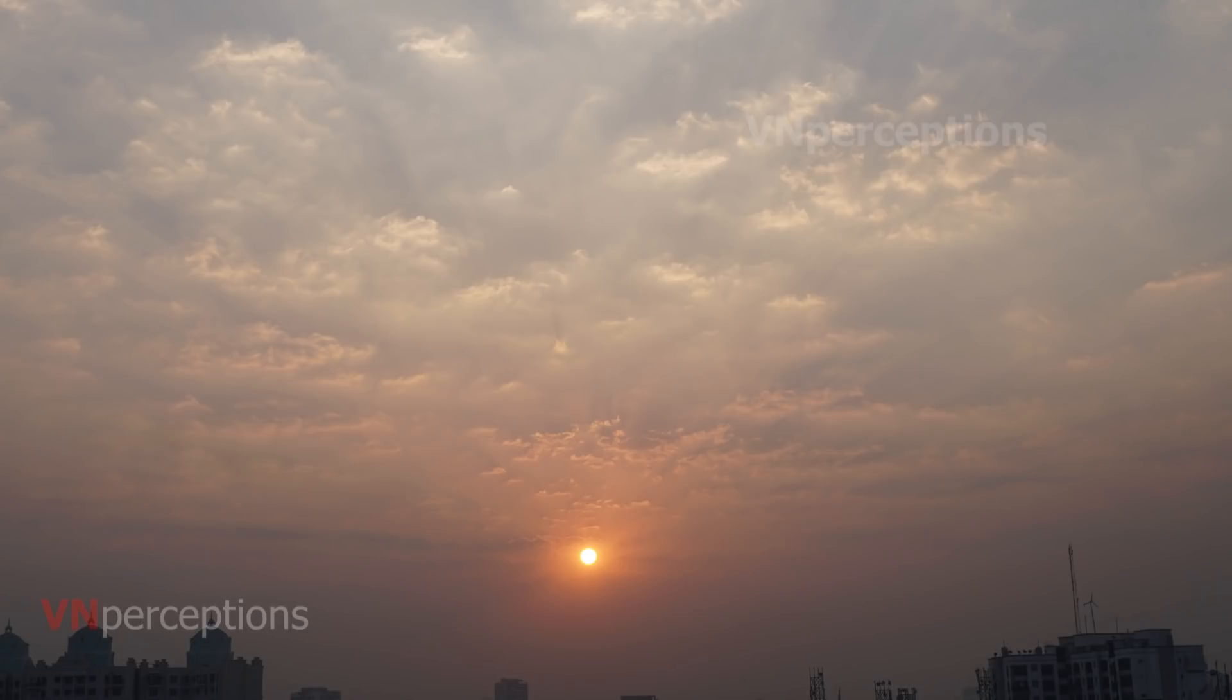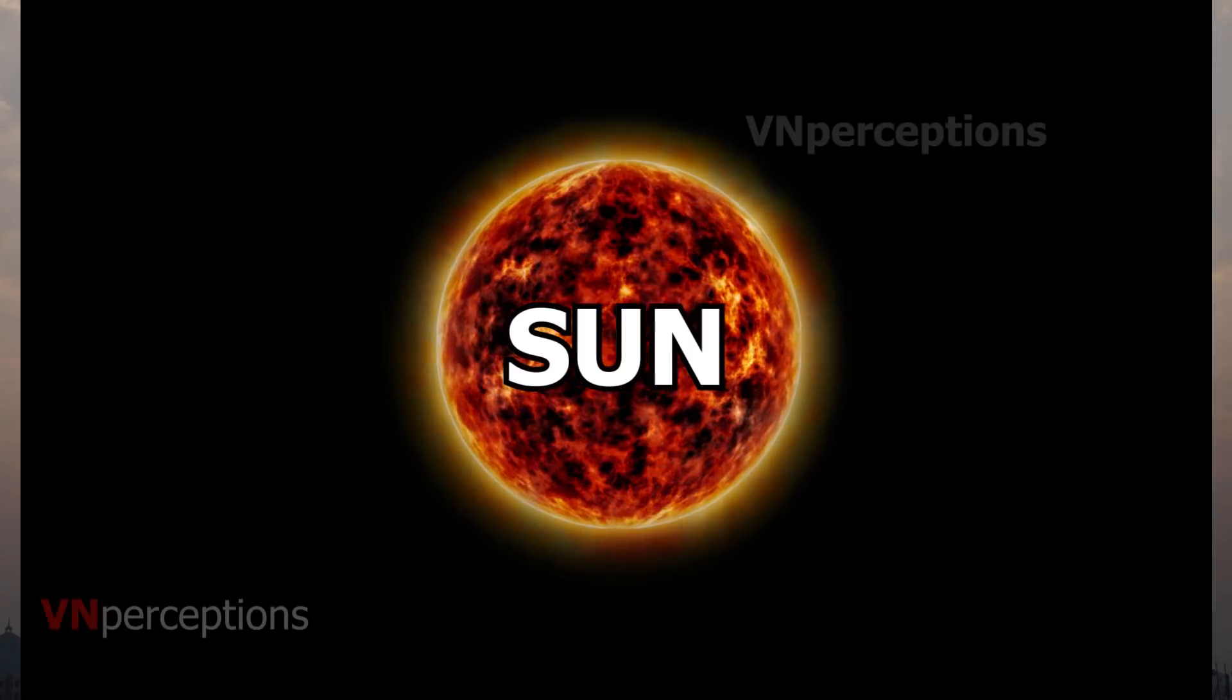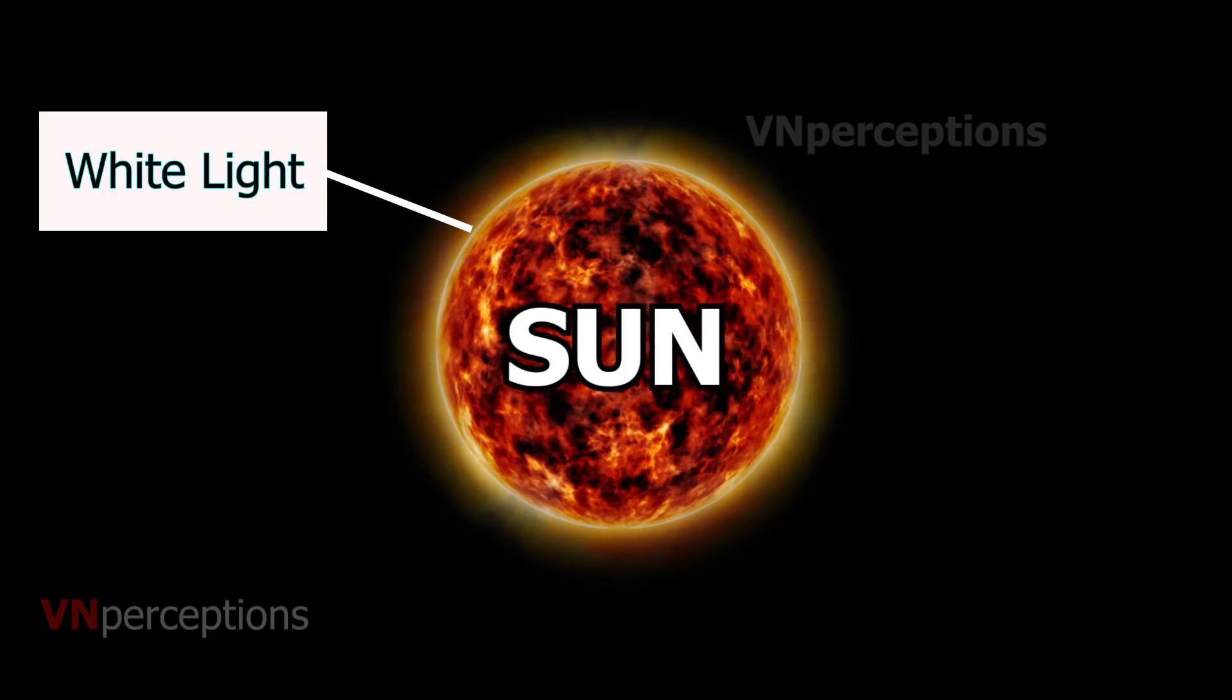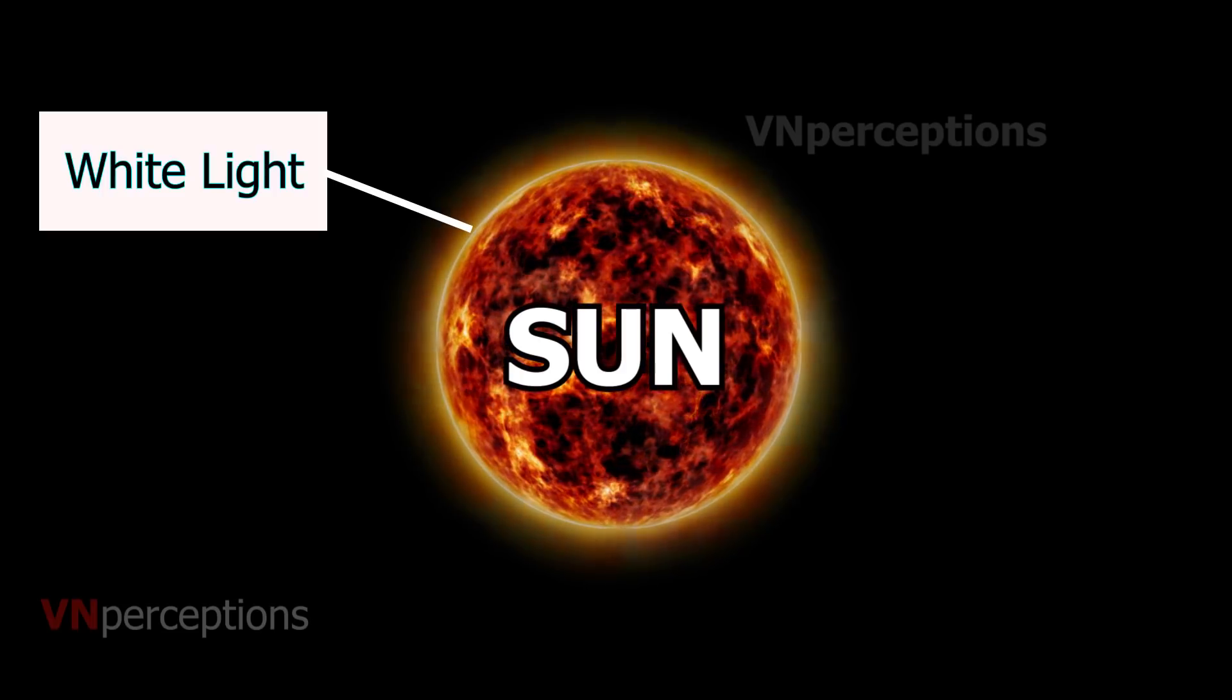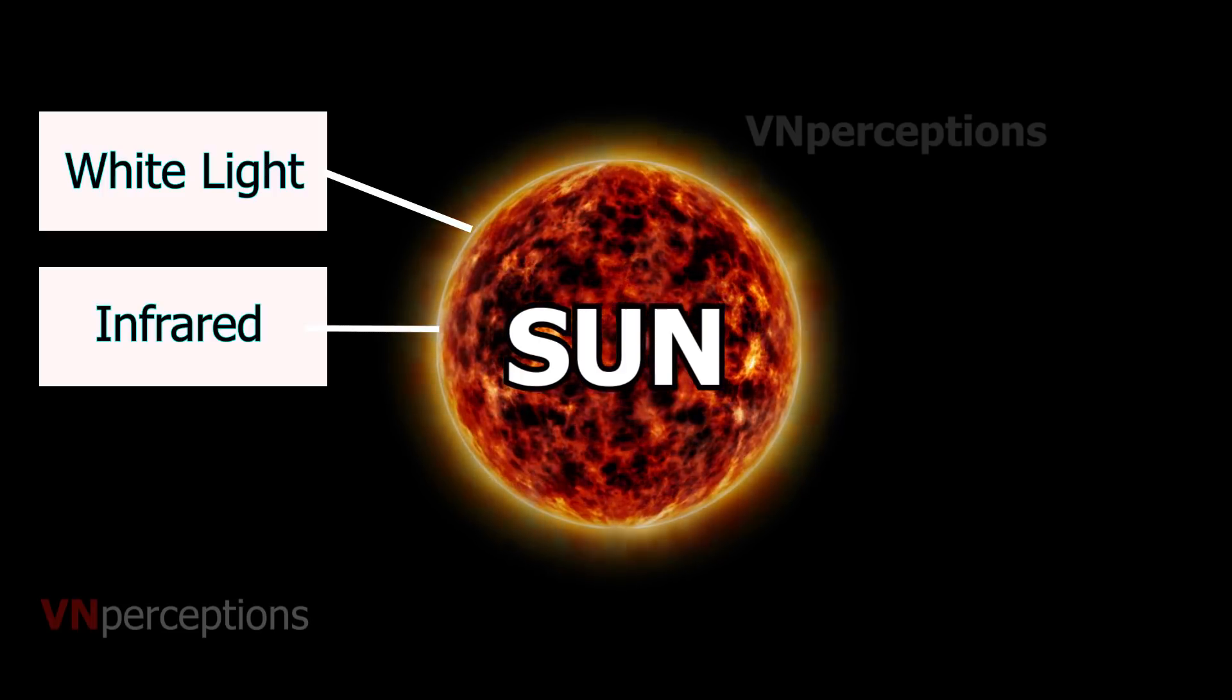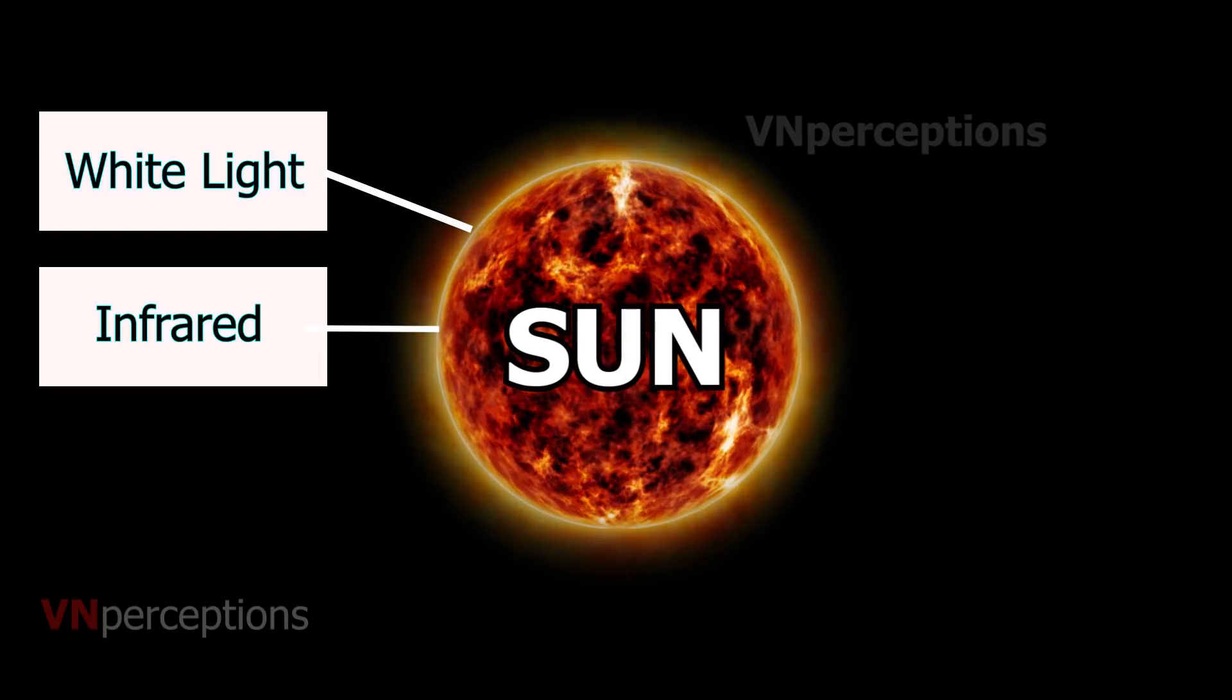The sun's radiation is made up of three parts. First is white light, which has seven colors. Second is infrared, the heat of the sun which is not visible. Third is ultraviolet rays.